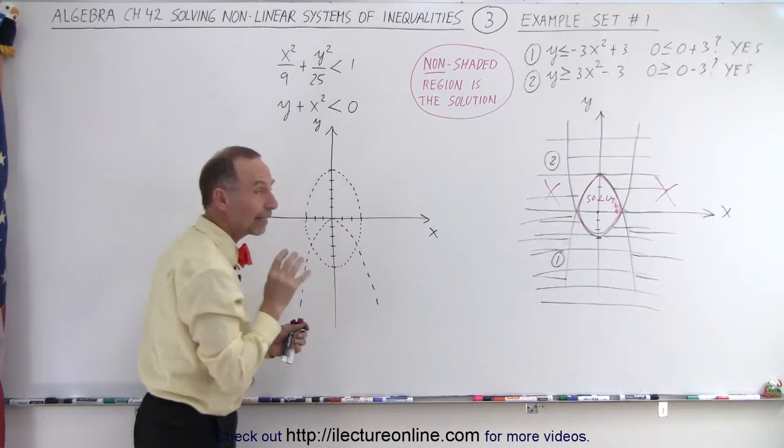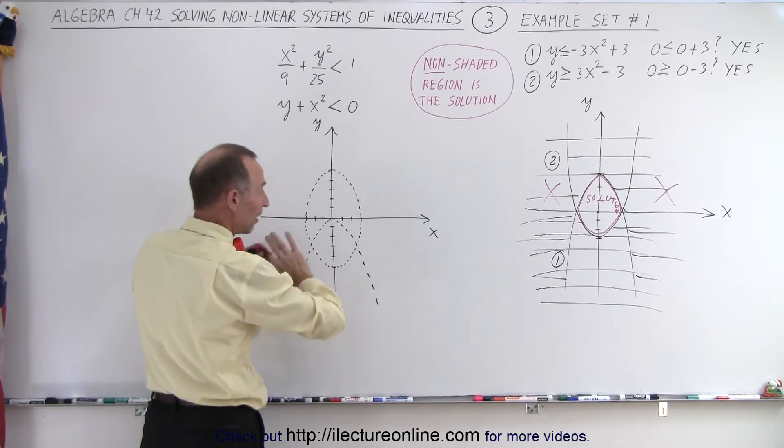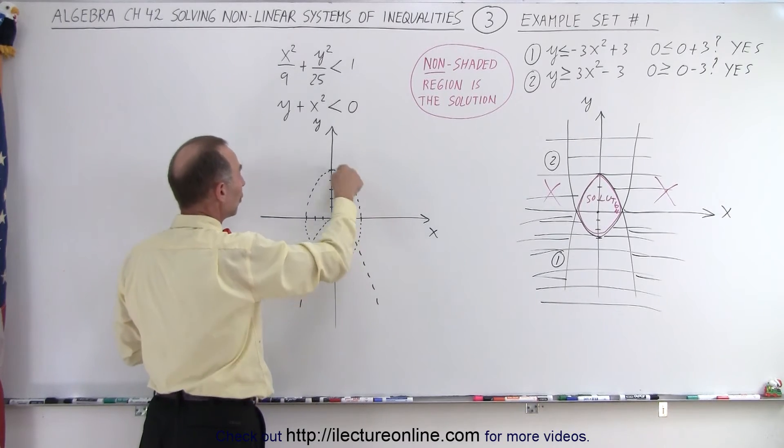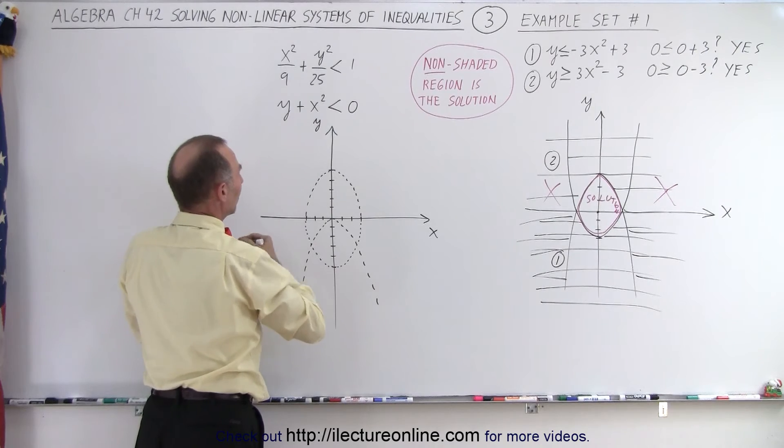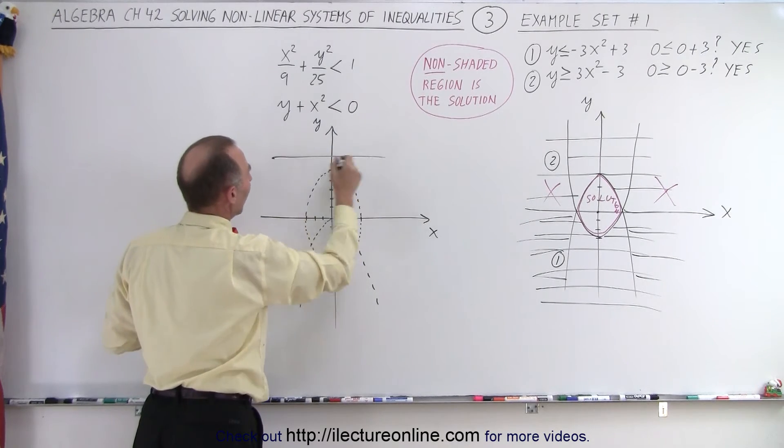Notice less than means that inside the ellipse is the solution; it means outside is not the solution. So we can get rid of that. Notice we don't include the boundary because there's no equal sign there. So we get rid of everything that's outside the ellipse—it's not part of the solution.